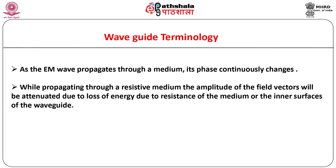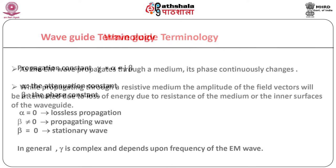As the electromagnetic wave propagates through a medium, its phase continuously changes. If there is no opposition by the medium, no energy is lost and the amplitude of the field vectors remains constant. However, while propagating through a resistive medium, some part of the energy may be lost due to resistance of the medium or the inner surfaces of the waveguide, and the amplitude of the field vectors will be attenuated. Propagation is characterized by propagation constant γ = α ± jβ, where α is the attenuation constant and β is the phase constant. For lossless propagation, α is zero; non-zero β implies a propagating wave, while β = 0 represents a stationary wave.